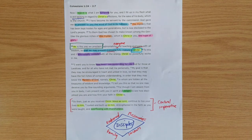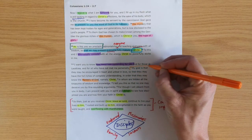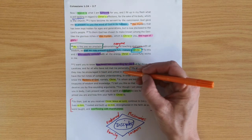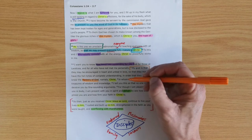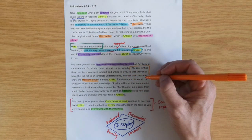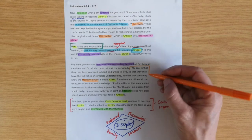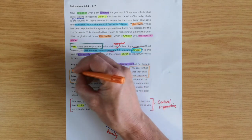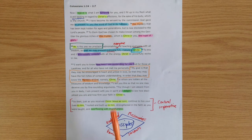He may present everyone fully mature in Christ. He's strenuously contending—how hard he's contending. He says, 'My goal is that you may be encouraged in heart and united in love, so that you may have the full riches of complete understanding.'